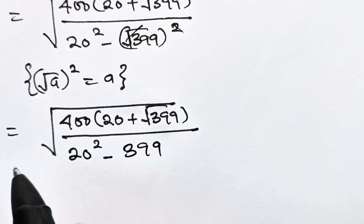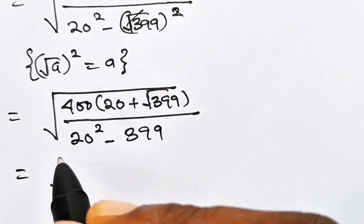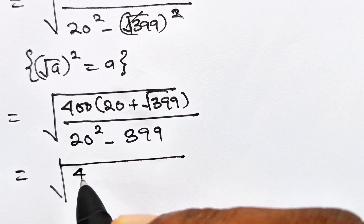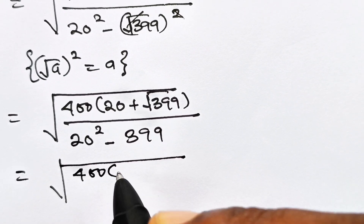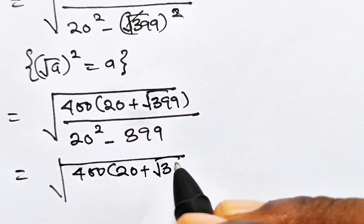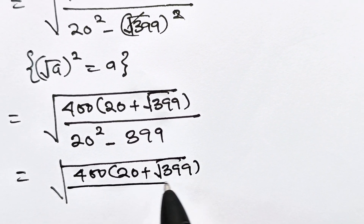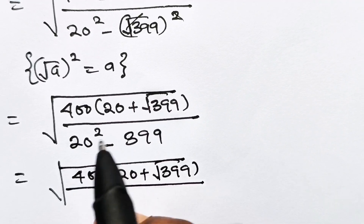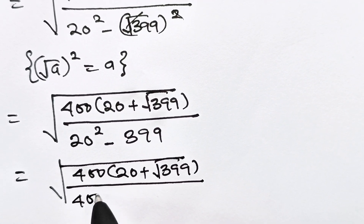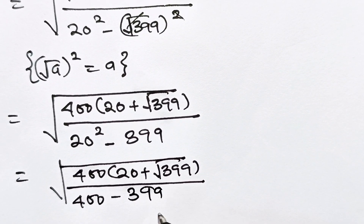Recall that the square root of A squared is equal to A. So this is equal to the square root of 400 multiplied by 20 plus root 399, divided by 20 squared which is 400, minus 399.